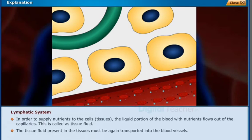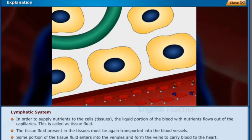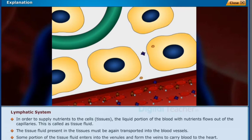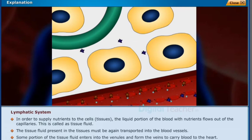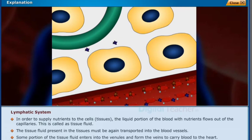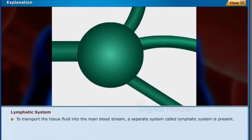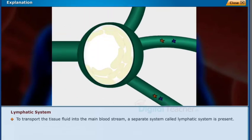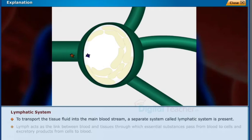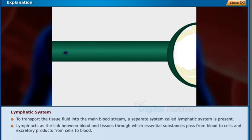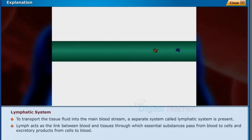Some portion of the tissue fluid enters into the venules and forms the veins to carry blood to the heart. To transport the tissue fluid into the main bloodstream, a separate system called the lymphatic system is present. Lymph acts as the link between blood and tissues, through which essential substances pass from blood to cells.